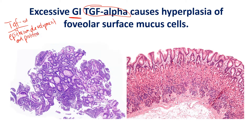So the buildup and eventual differentiation of that epithelium — and specifically this involves GI TGF-alpha. When you have a lot of this, you can imagine that the epithelium of the stomach specifically, where the majority of it's coming from, is going to cause hyperplasia of the epithelium.